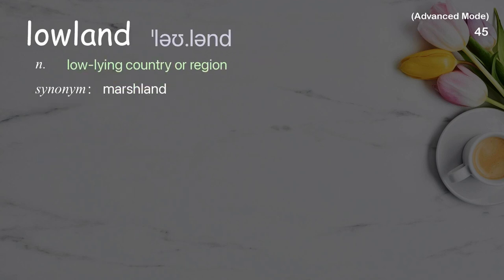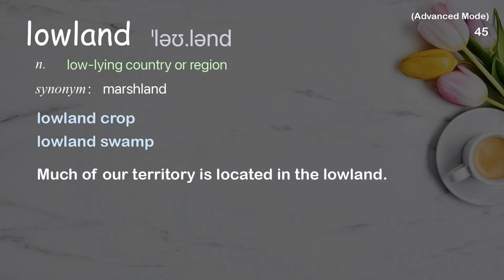Lowland: low-lying country or region. Examples: lowland crop, lowland swamp. Much of our territory is located in the lowland.